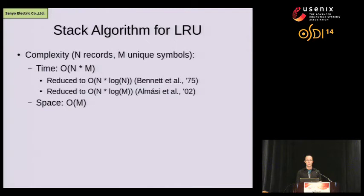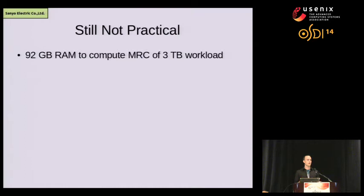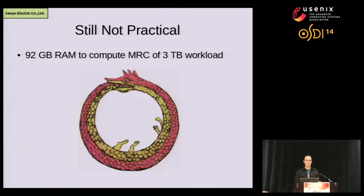Looking at the complexity: given a workload with N requests touching M distinct addresses, the time complexity is O(N log M) — originally O(N·M) with a linked list, reduced to O(N log M) using balanced search trees. However, the memory overhead is O(M) and hasn't really changed. This memory overhead makes the technique quite impractical. Studying the MSR Cambridge workloads, which touch about 2.7 terabytes of unique data, we needed 92 gigs of RAM just to compute the MRC. We need a more efficient way to do this.